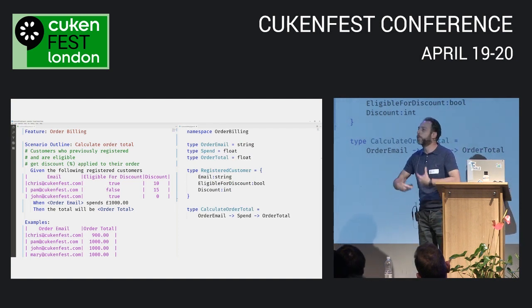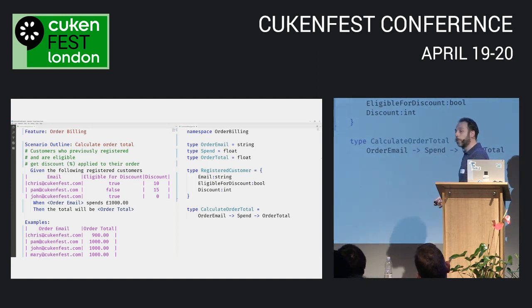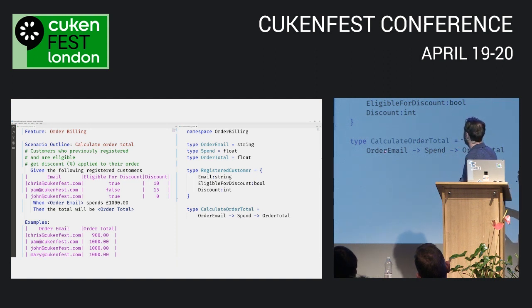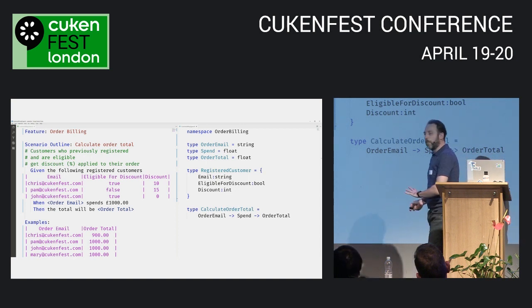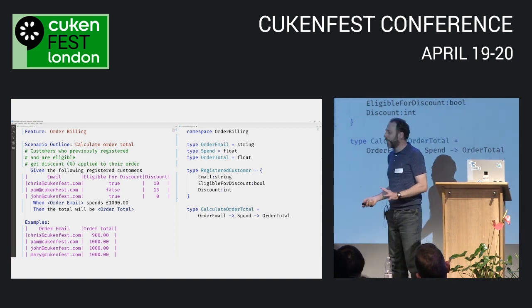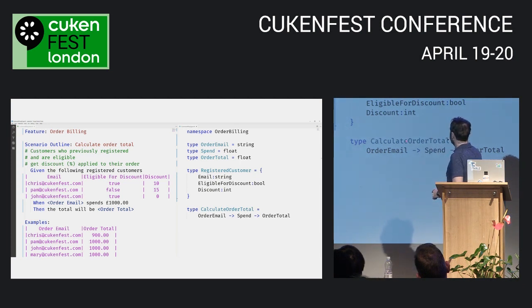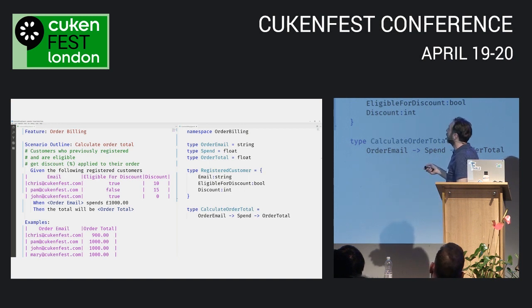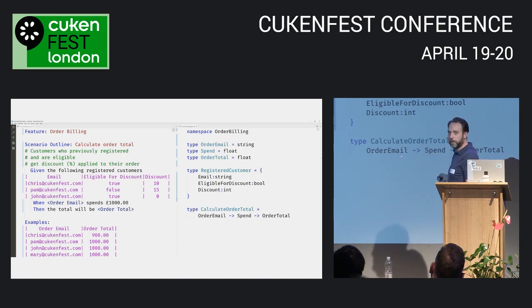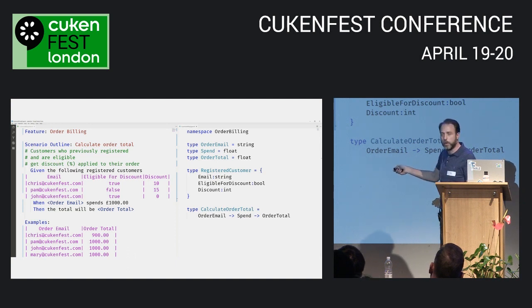That's a bit nasty, so let's use aliases. An alias isn't type-safe — it's just a moniker to help describe something. Now instead of strings and floats, it says: give me an order email and the spend, and I'll calculate the order total. That looks like a pretty good start, but I have a problem: this signature is supposed to represent this scenario, and the scenario definitely knows about registered customers — it's step one — but this signature doesn't.